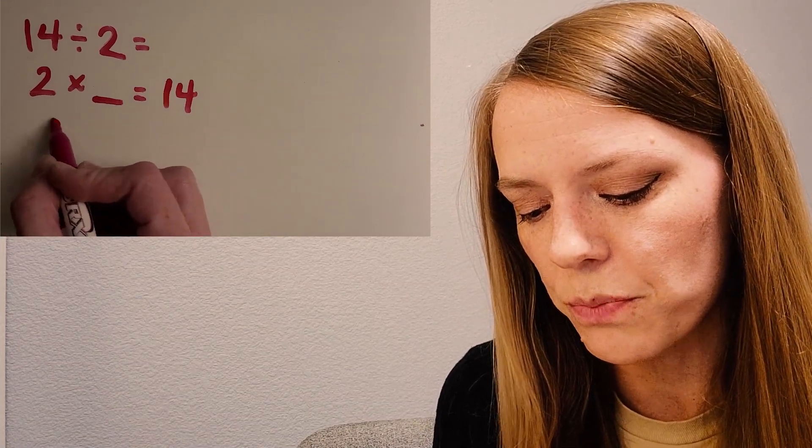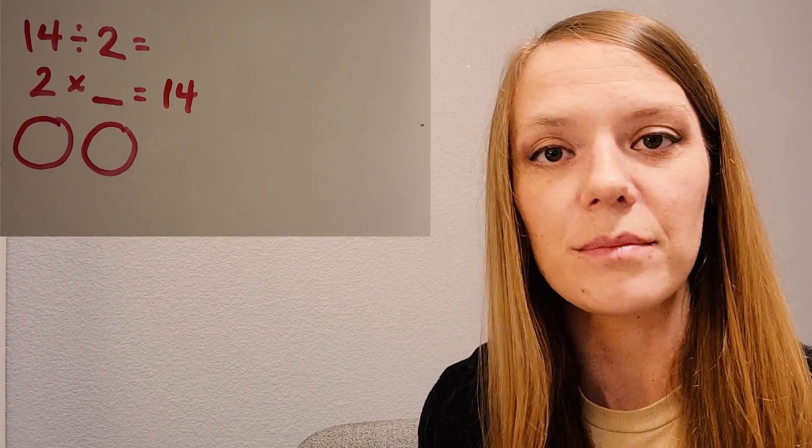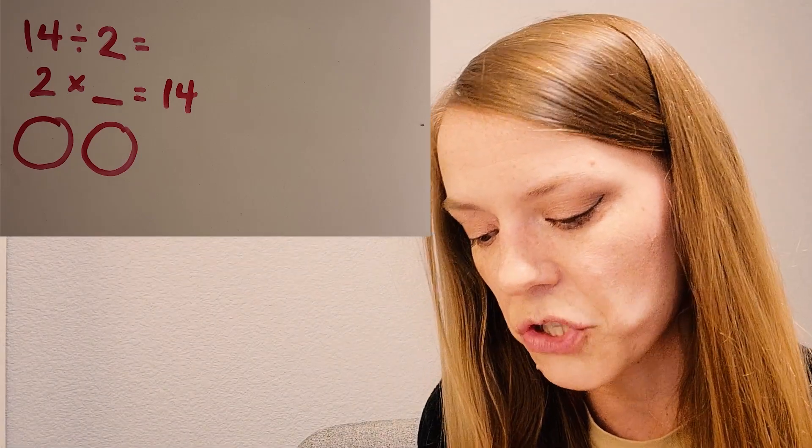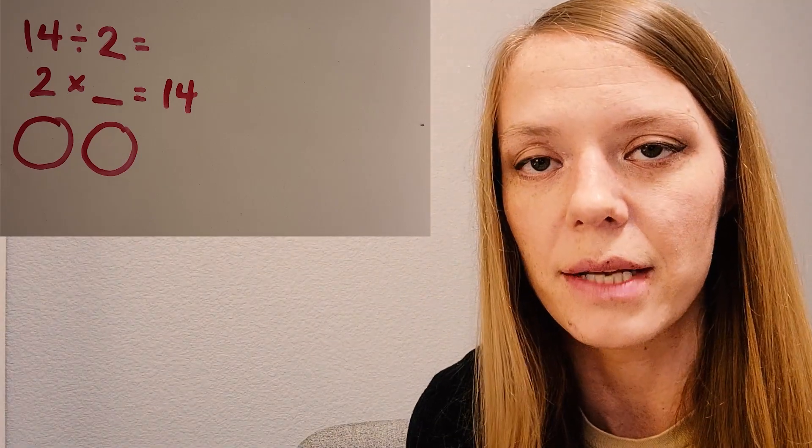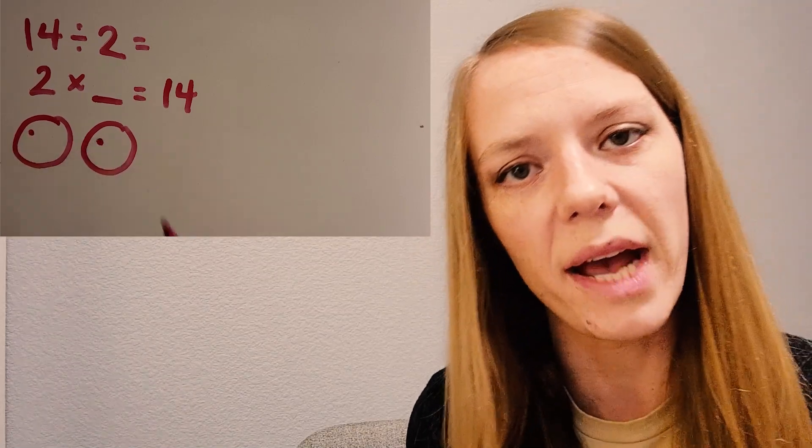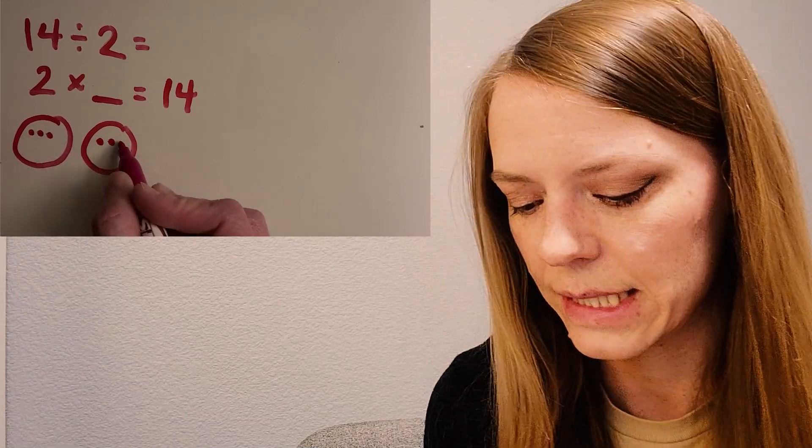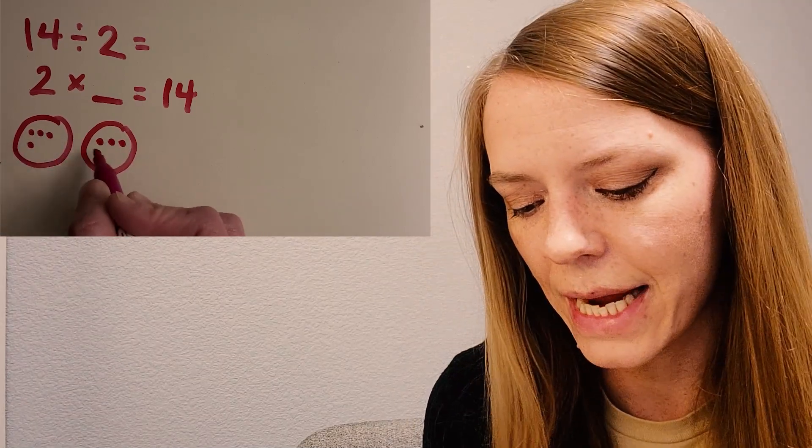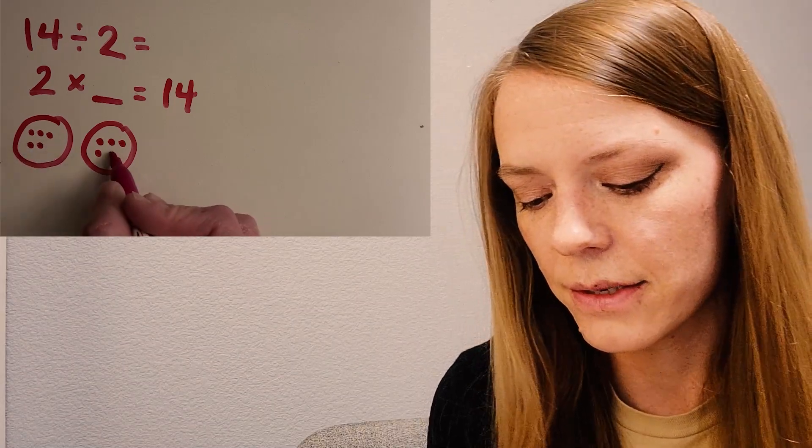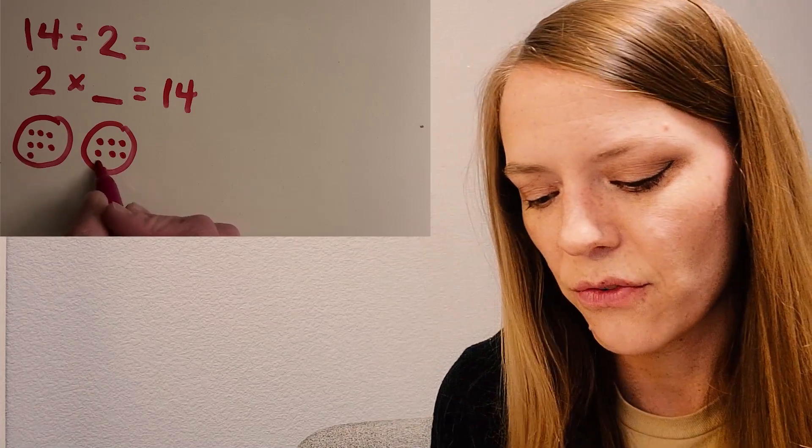And I can just start putting the 14 in the groups until I run out. Because that's what division really is. It's just separating something into groups. So there's one, two, notice how I go back and forth. Three, four, five, six, seven, eight, I'm going to stop when I get to 14. Nine, 10, 11, 12, 13, 14.